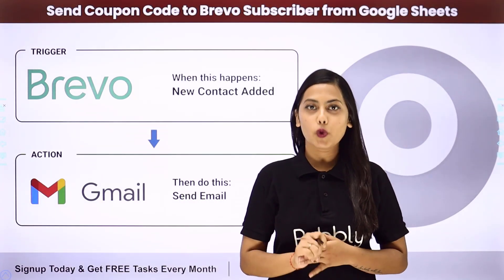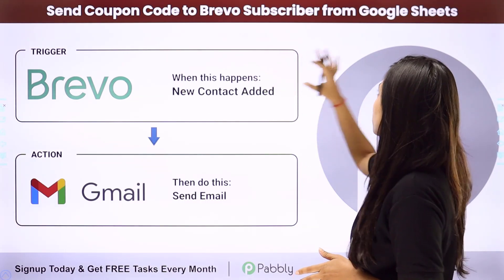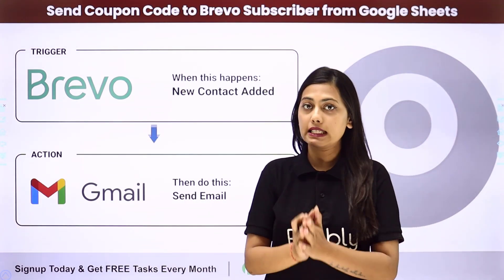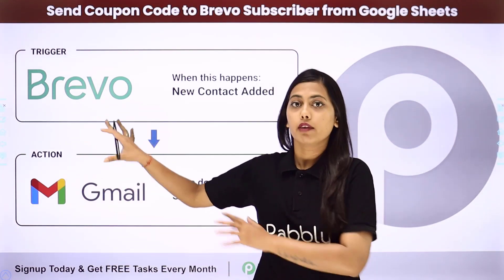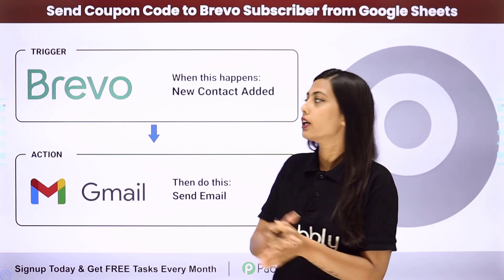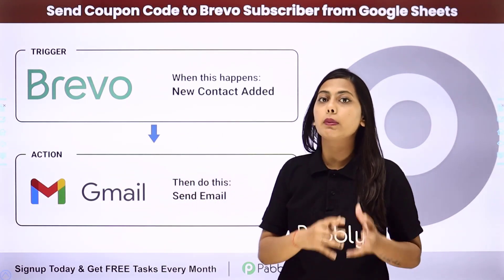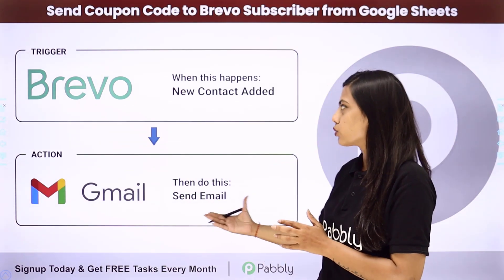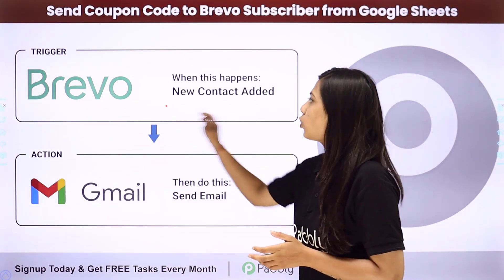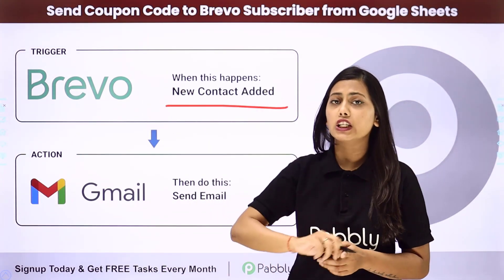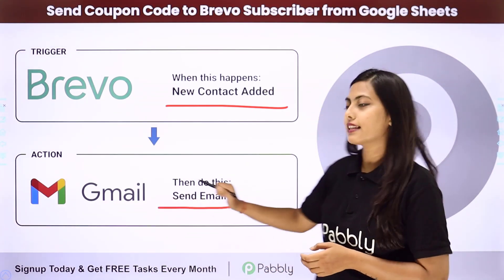In this video we are going to learn how to send coupon codes to Brevo subscribers from Google Sheet. We are going to integrate Brevo and Gmail, with Google Sheets in the middle where we will fetch coupons from. Whenever a new contact is added in Brevo, formerly known as Sendinblue, a coupon will be fetched from Google Sheet and sent to the newly added customer via Gmail.